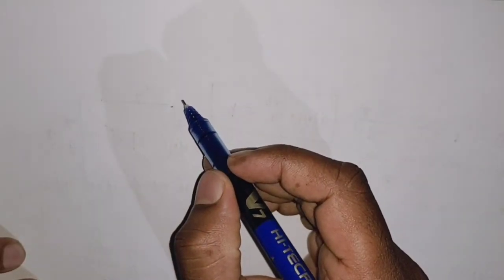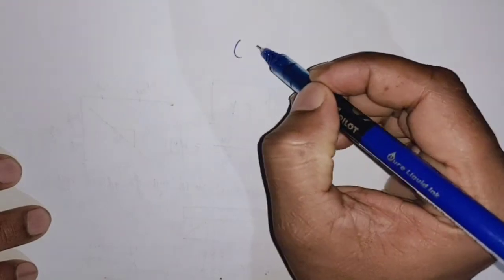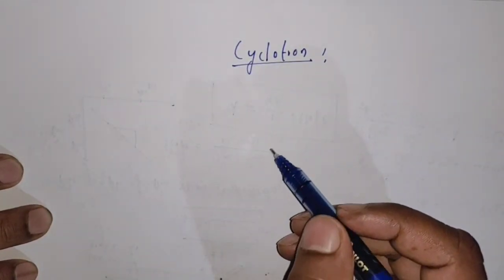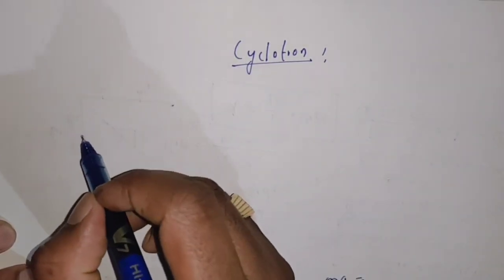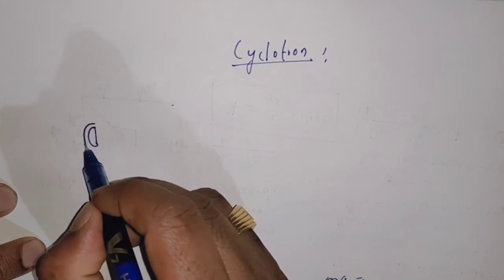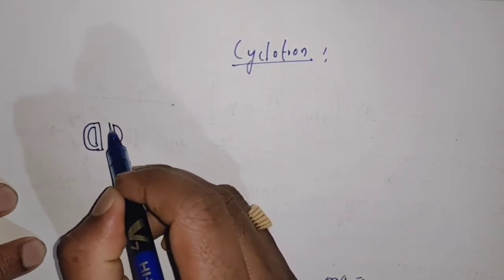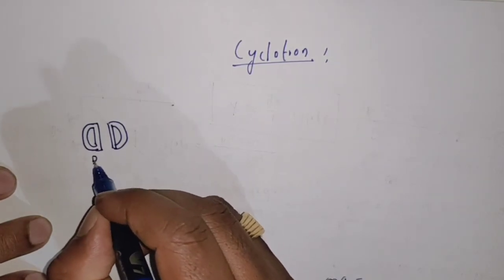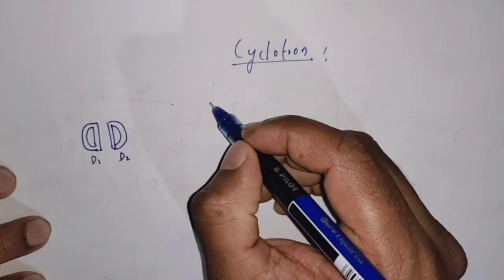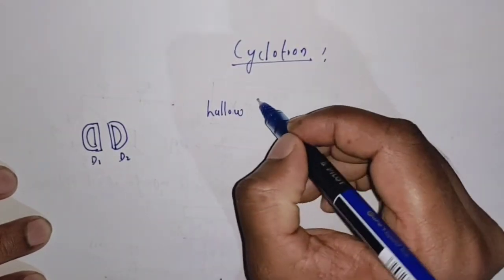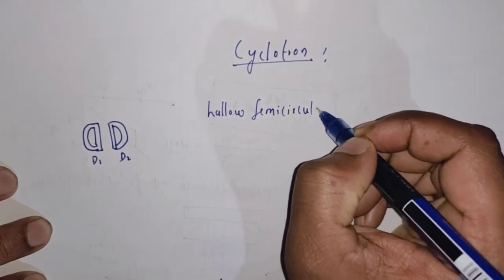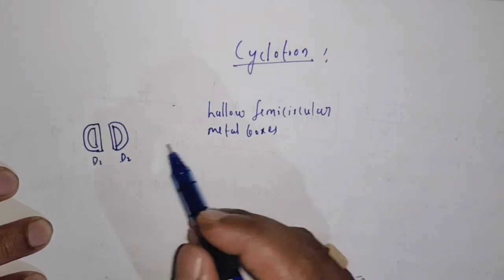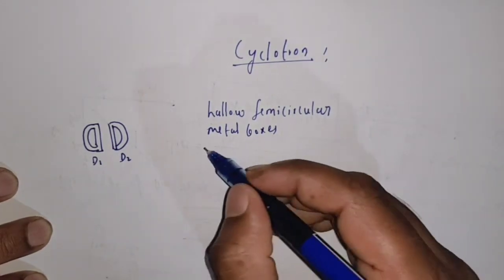In this video I am going to discuss about the cyclotron, which is also a particle accelerator. The construction of cyclotron consists of two semicircular metal boxes, denoted as D1 and D2. These two are hollow semicircular metal boxes.